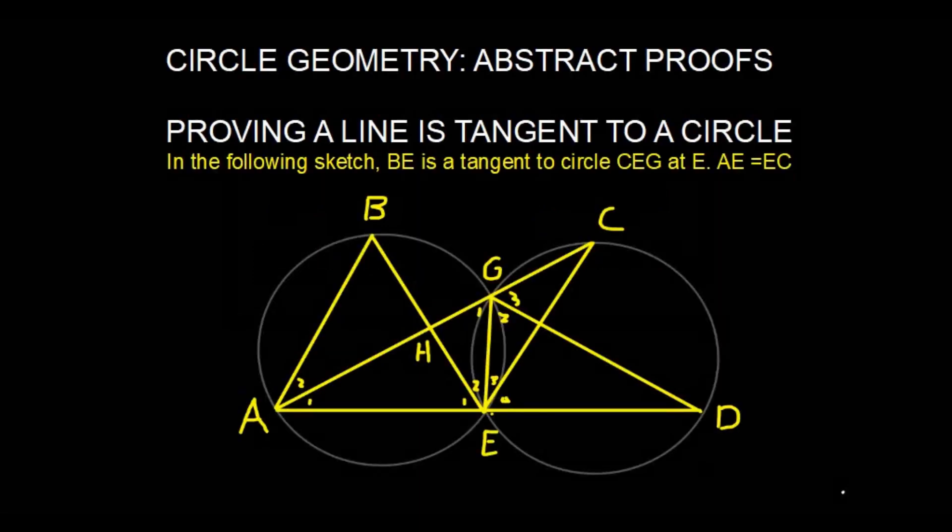To do this, we will be looking at the following example, where we have BE a tangent to circle CEG at point E and AE equals EC. Let's quickly take a look at that. Line BE is a tangent at circle CEG, so this being at point E over here.